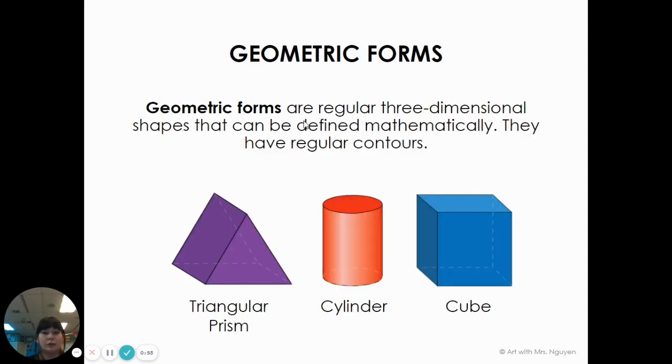Geometric forms are regular three-dimensional shapes. Those are the kind of forms that you might learn in math class. Very similar to geometric shapes which are things like triangle, square, circle, flat shapes that have a name. Geometric forms are exactly like that. They have a name. They're all regular shapes that are three-dimensional.